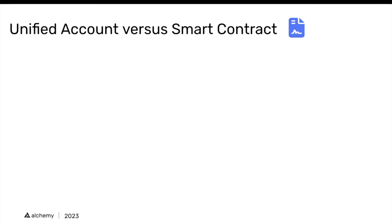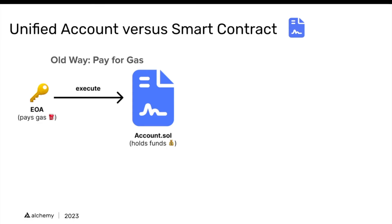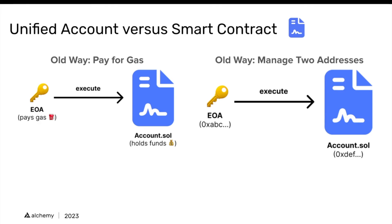Now, what do we get from a unified account versus a smart contract alone? A common use case is a multi-sig, where you have an account holding funds and an EOA that executes against that account. Each EOA interacting with the multi-sig has to pay gas to initiate a transaction. So even though your account on-chain holds the funds, your EOAs still need to hold some gas. Another frustration with this old approach is managing two addresses — one for the EOA and one for the on-chain account. With a single unified account, you can pay gas directly from your one on-chain smart contract account, and treat that as your primary address.